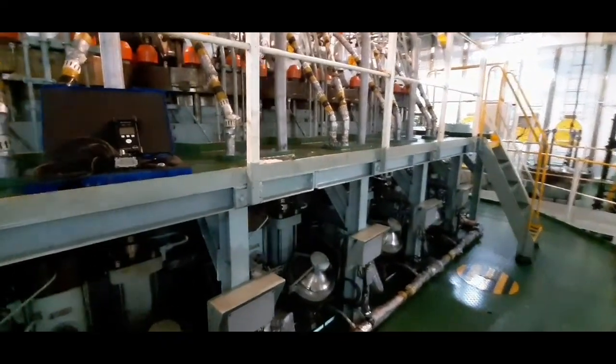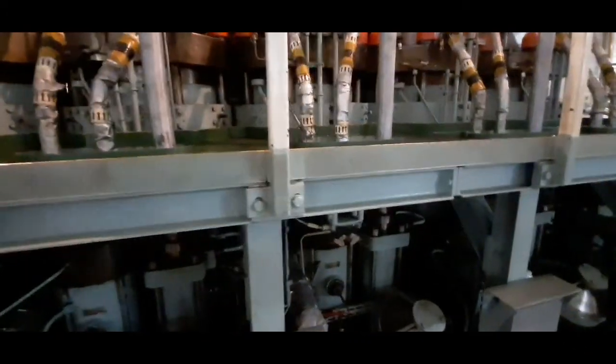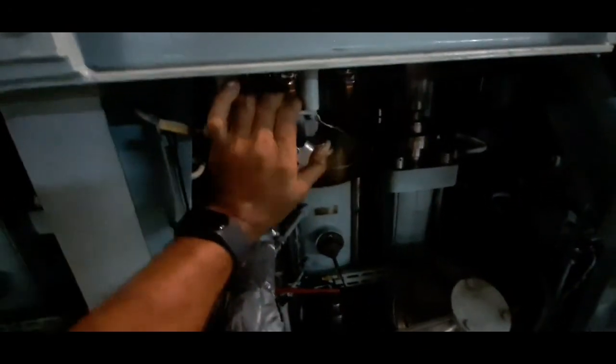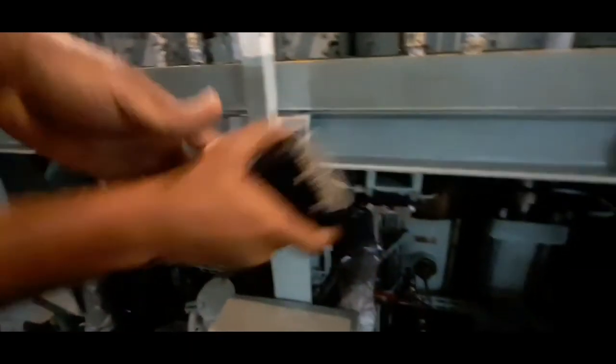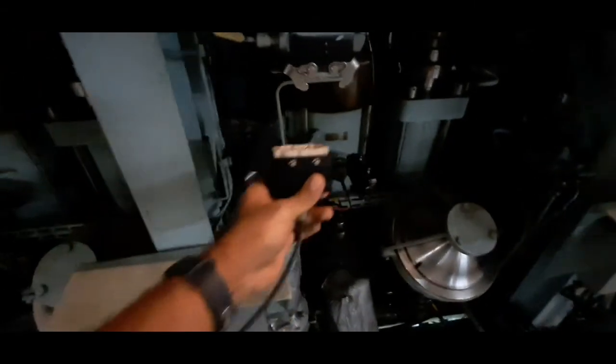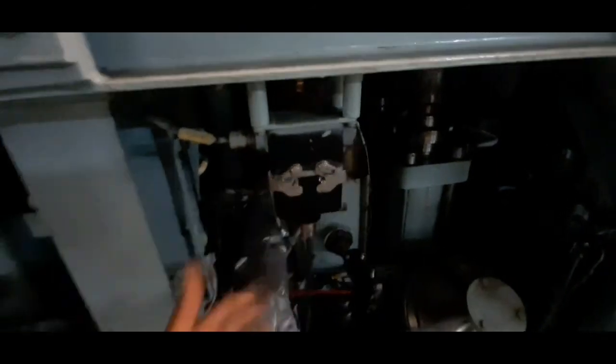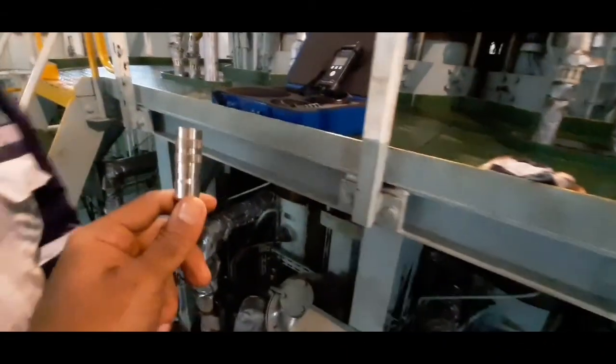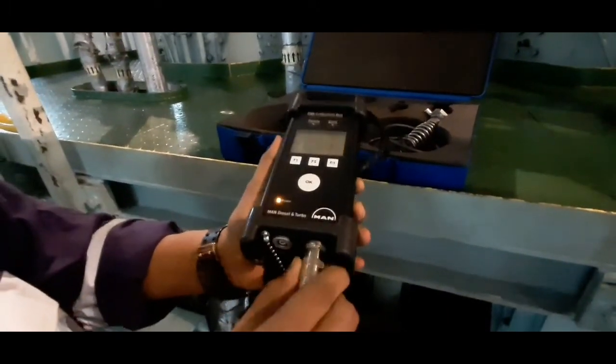Now you need to set up the connection between the PMI data acquisition unit and the PMI controller. For this you need to attach the given cable at the junction box. Check the direction of the pins. Once you connect the cable at the junction box, connect the other end of the cable to the PMI controller. You can see the power light goes on.